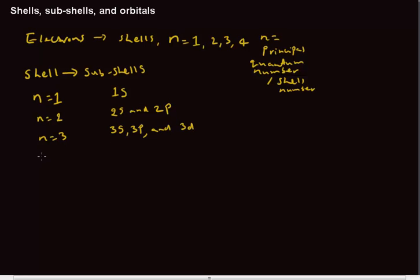And if I say n equals 4, if my shell number is 4, there are four subshells, 4s, 4p, 4d and 4f. Right?